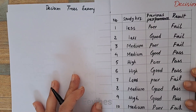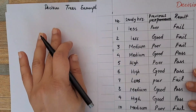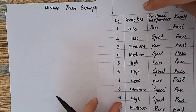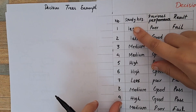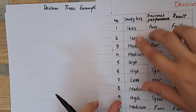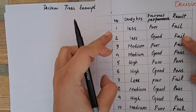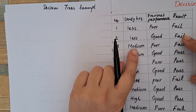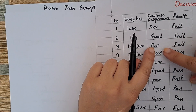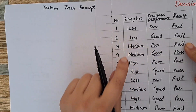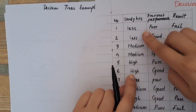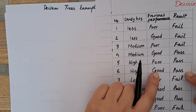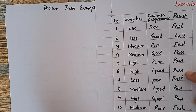Hi everyone, I'm Asma from the Double Live. Let's solve an example for decision trees. You are given a dataset where two feature vectors — study hours and previous performance — are used to determine the result of a particular student. If a student studies for medium hours and his previous performance was poor, he will fail. If his study hours are high and previous performance was good, he will pass.